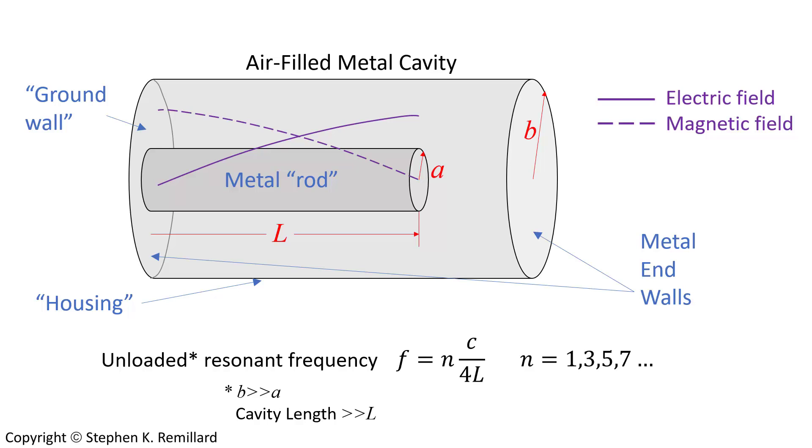And then there are higher order modes, that frequency, three times the frequency, five times, seven times. Every mode must have an electric field maximum at the end of the rod, and a current minimum at the end of the rod, and so it's only going to be an odd number of modes. So it's one quarter of a wavelength long, three quarters, five quarters, seven quarters, and so on. And that's the unloaded resonant frequency.